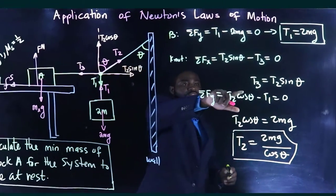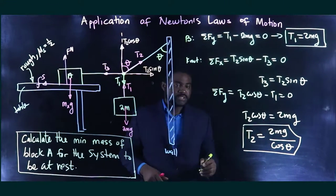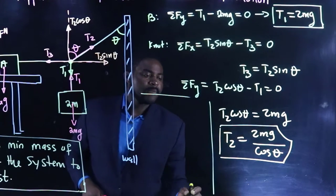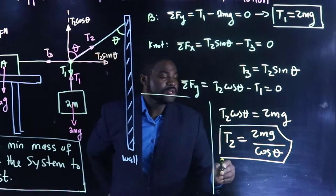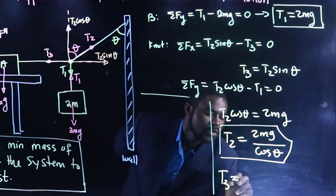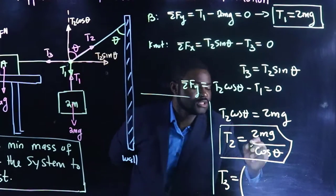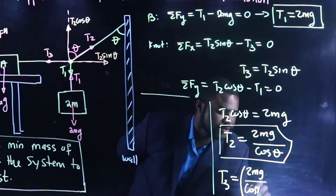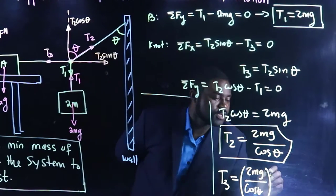So what will be T3? This means, this would mean that T3, which is T2, this is 2MG divided by cosine theta, multiplied by sine.